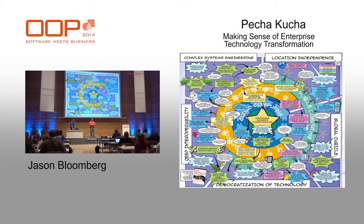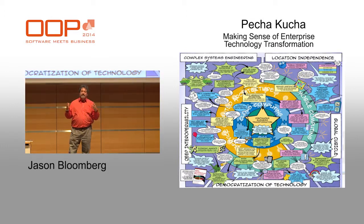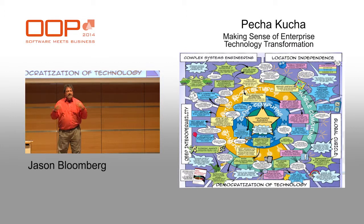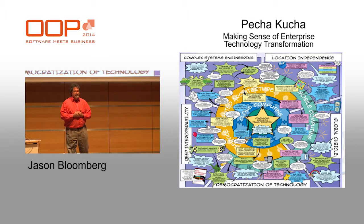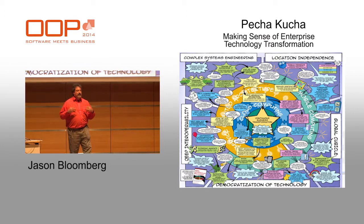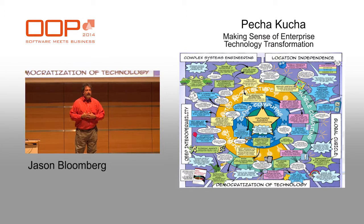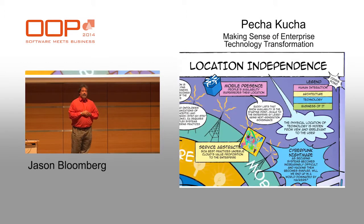The poster is divided into five sections called super trends, and the key point of the poster is to describe all the interrelated trends in enterprise IT today. Service-oriented architecture, mobile computing, and cloud computing are cross-cutting trends, but we'll talk about each of the five super trends in turn.